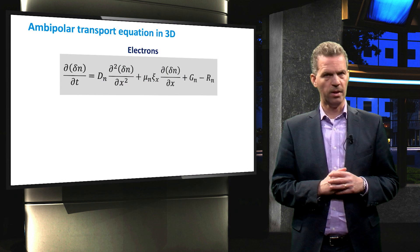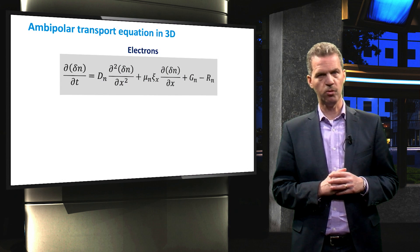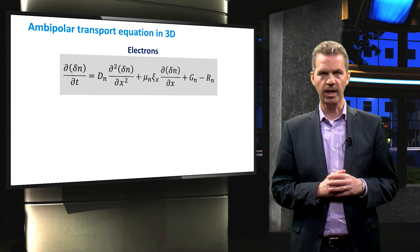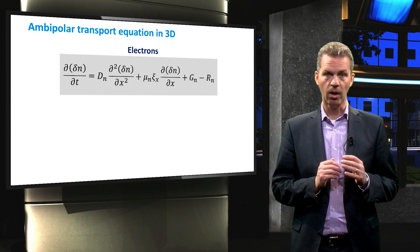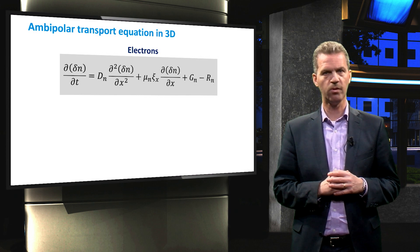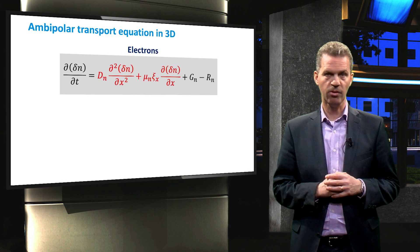Now that we have gone through an example in one dimension, we can expand the ambipolar transport equation to three dimensions. Let's start with the equation for electrons. The only terms which are related to the dimensions of the control volume are the diffusion and drift terms, which show a dependence on x.